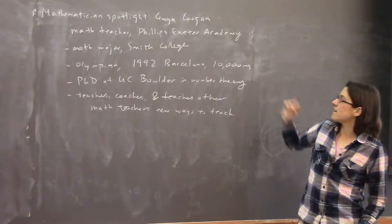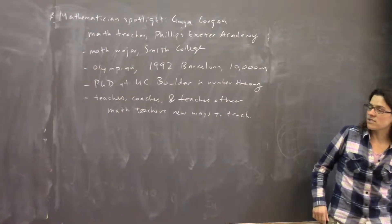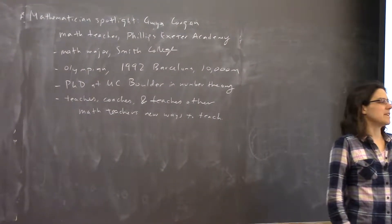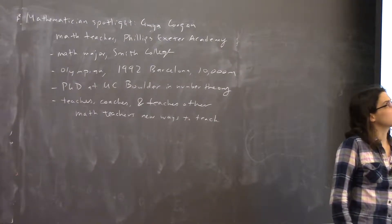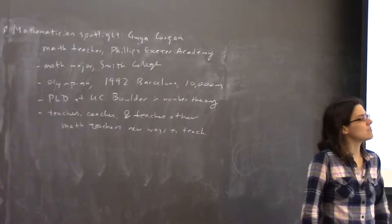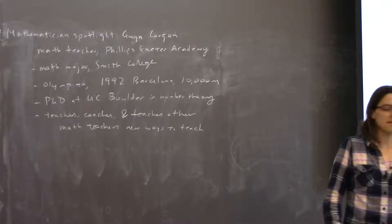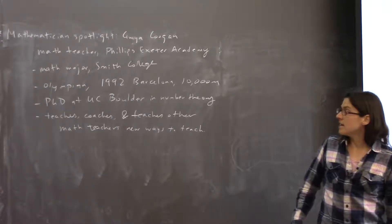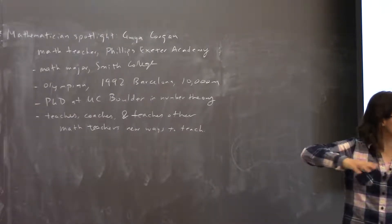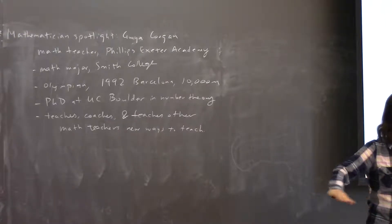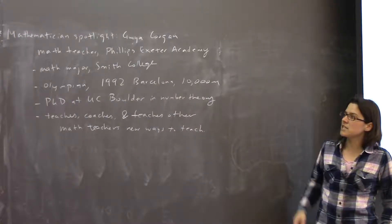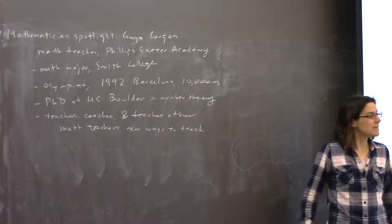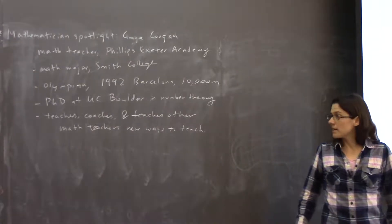She ran in the 10,000 meters and was also on the national team for cross country. She was nationally ranked as the top marathoner at least once. And she kept doing math all through that — she was never just a runner. She always kept doing math. She got her PhD at the University of Colorado in Boulder in number theory and studied elliptic curves.